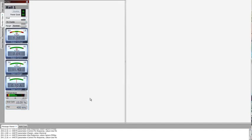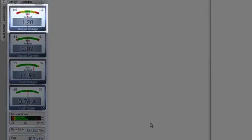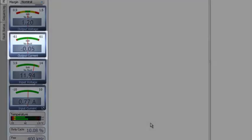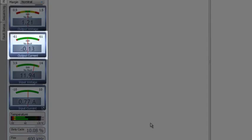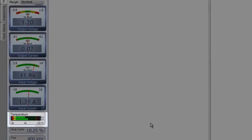So as we look on the GUI, you can see each one of these presented clearly on the main page. The output voltage reading 1.2 volts, the output current right now with the no-load condition, the input voltage, input current, and also the temperature.